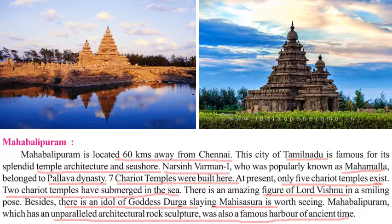Mahabalipuram is 60 kilometers from Chennai in Tamil Nadu, famous for its splendid temple architecture. It is a city full of many different temples. King Narasimhavarman, also known as Mahamalla, who belonged to the Pallava dynasty, constructed seven chariot temples; today only five exist because two are submerged under the sea. There is an amazing figure of Lord Vishnu in a smiling pose and also an idol of Goddess Durga slaying Mahishasura. Mahabalipuram is said to have unparalleled architectural rock sculpture.